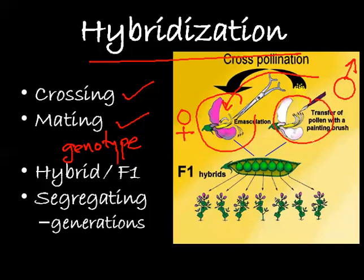This process is essentially done to prevent self-pollination among the plants. Here, the white flower is crossed with the purple flower. The first progeny we receive is called F1 hybrids — the F1 hybrid is the result of a cross between two dissimilar genotypes.